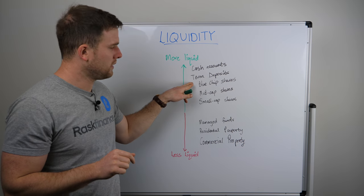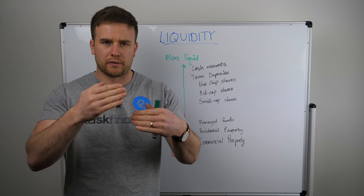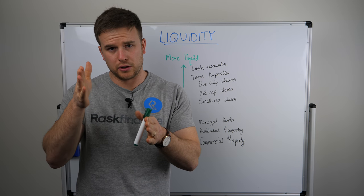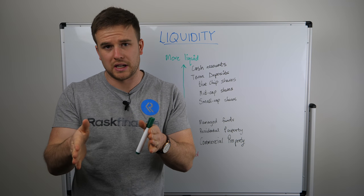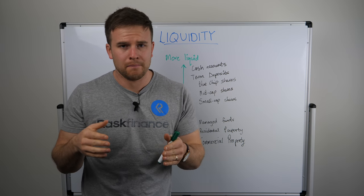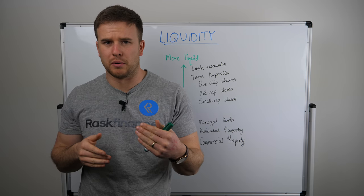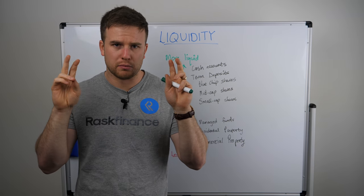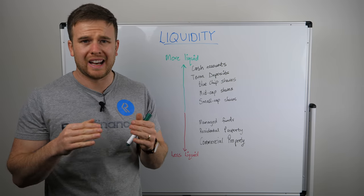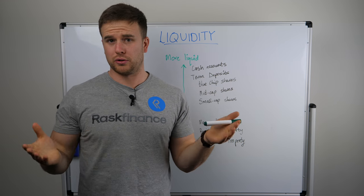The next one is a term deposit. When you enter a term deposit, typically you will enter it for a specific amount of time — you might say you will leave your money in the bank for a month, six months, a year, a few years, etc. And typically when you want to get your money out of a term deposit, you will have to break the contract, and that might cost you a little bit of interest and it may take a little bit of time — say a day or two.